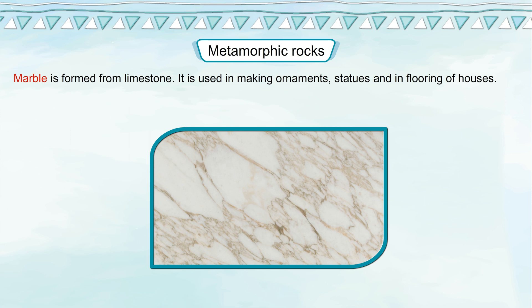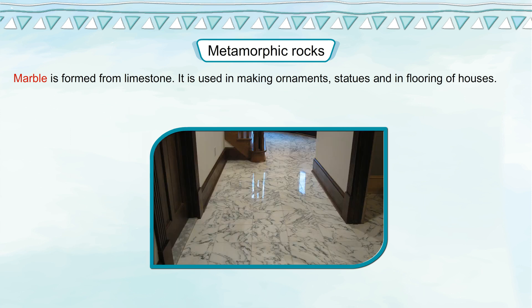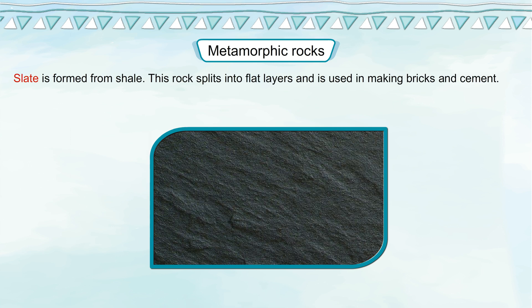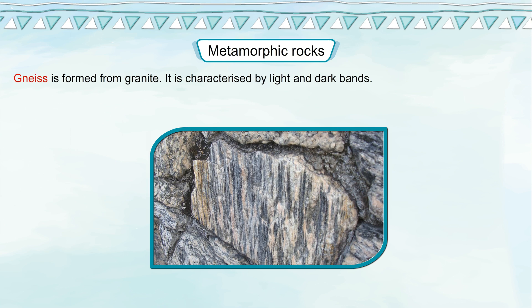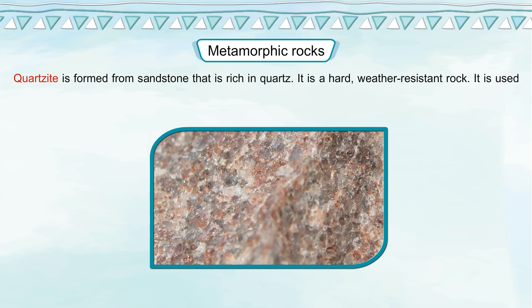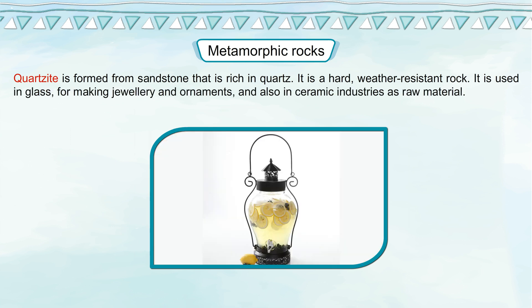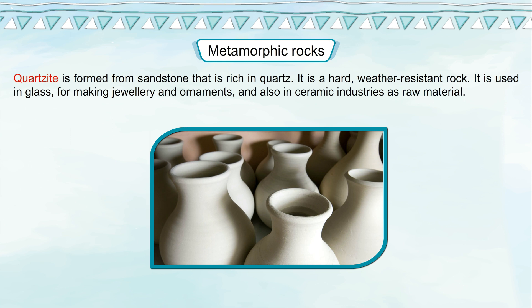Marble is formed from limestone and is used in making ornaments, statues, and in flooring of houses. Slate is formed from shale — it splits into flat layers and is used in making bricks and cement. Gneiss is formed from granite and is characterized by light and dark bands. Quartzite is formed from sandstone that is rich in quartz. It is a hard, weather-resistant rock used in glass, making jewellery, ornaments, and in ceramic industries as raw material.